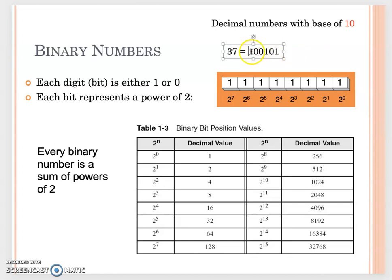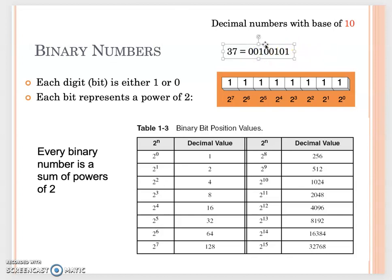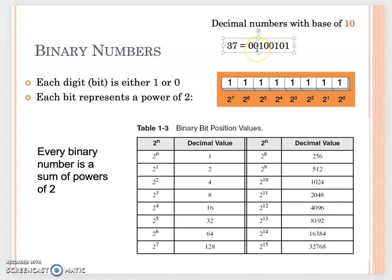So 37 in decimal equals 100101 in binary. But when we write binary, it needs to be either 1 byte or 2 bytes. Since we only have 6 bits here, you need to fill up the first 2 bits with zeros. That's how 37 equals the 8-bit binary number 00100101.